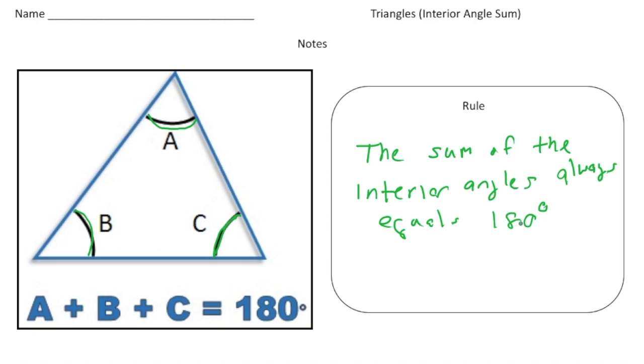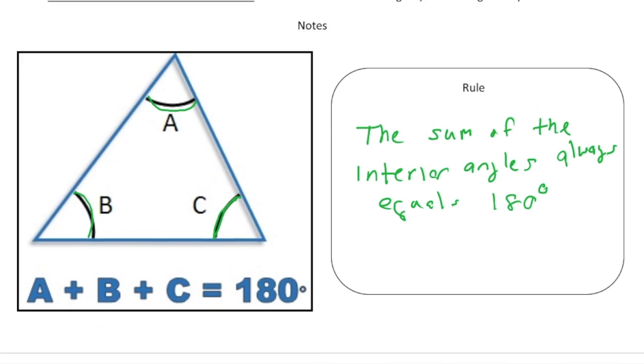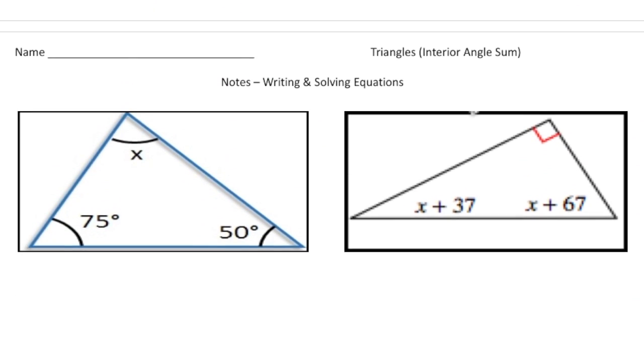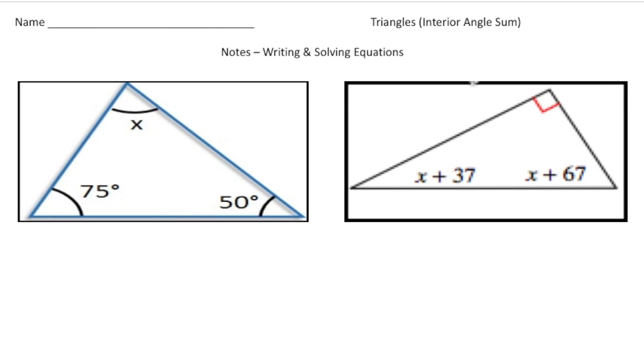So again, no matter what type of triangle it is, whether it's a right triangle or a scalene triangle, the three interior angles always add up to 180. So if you turn the page, now that you know this, let's try some of these problems.